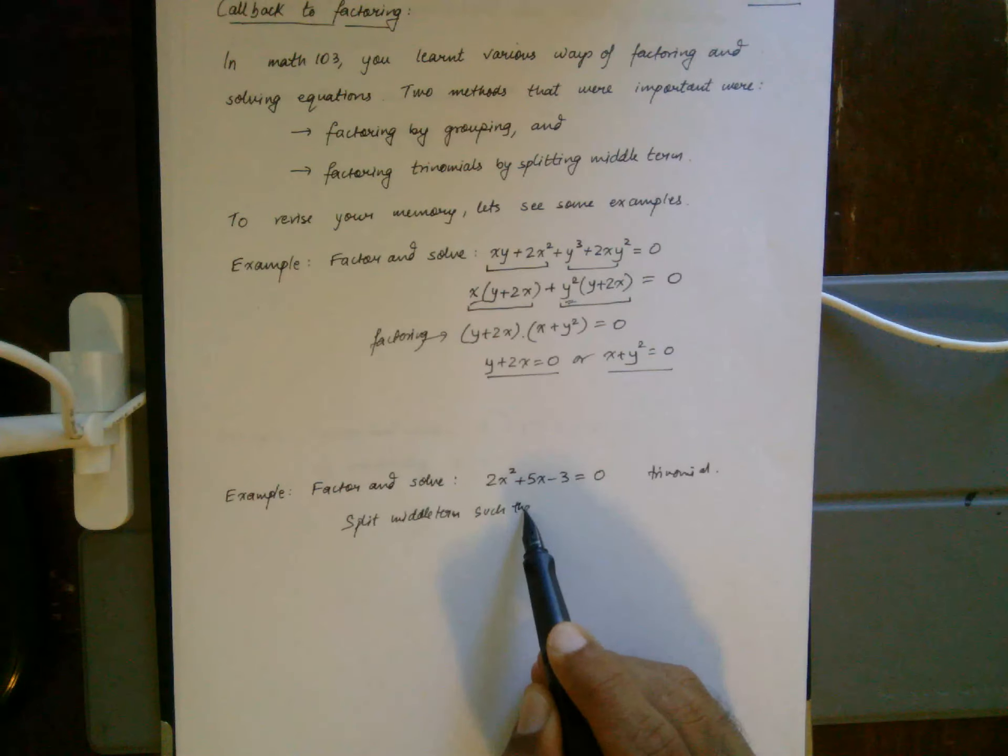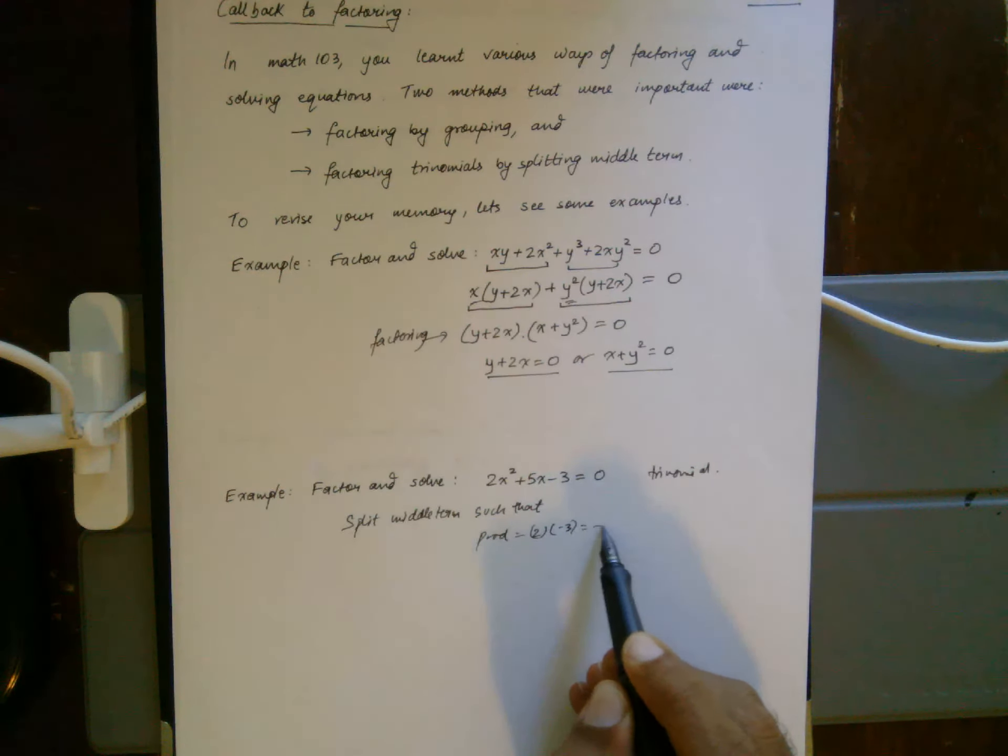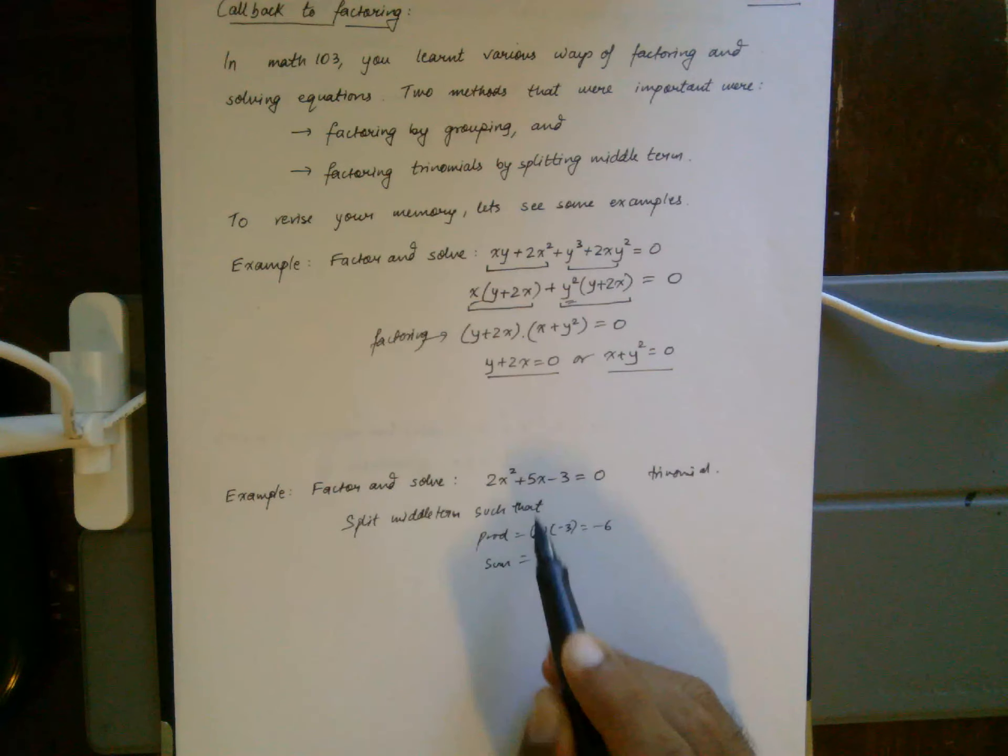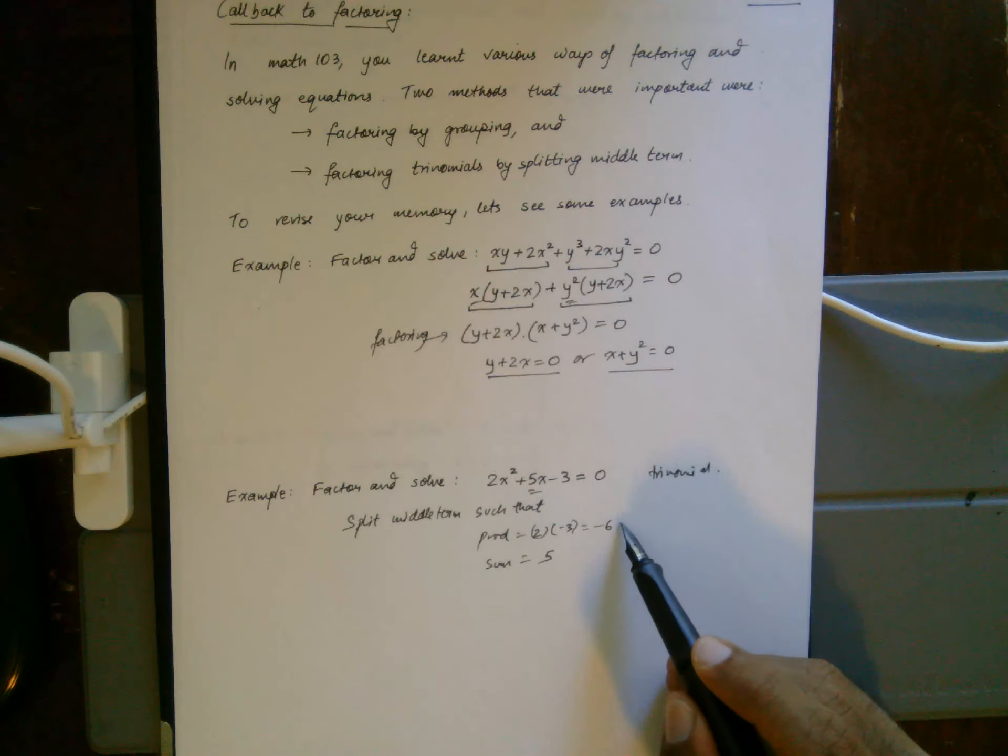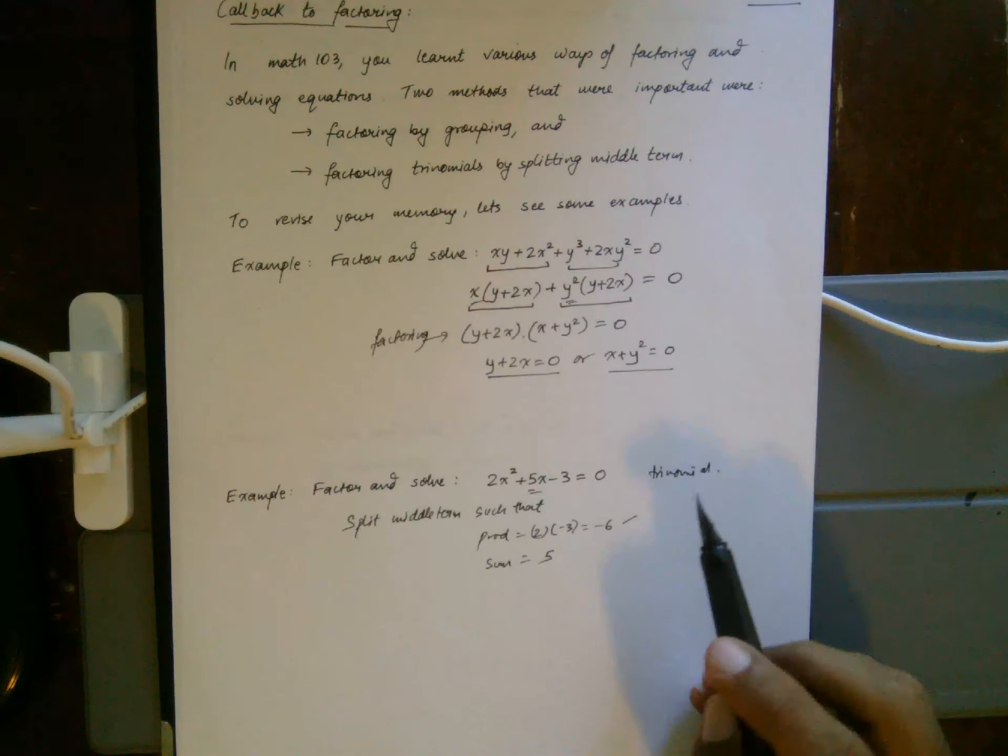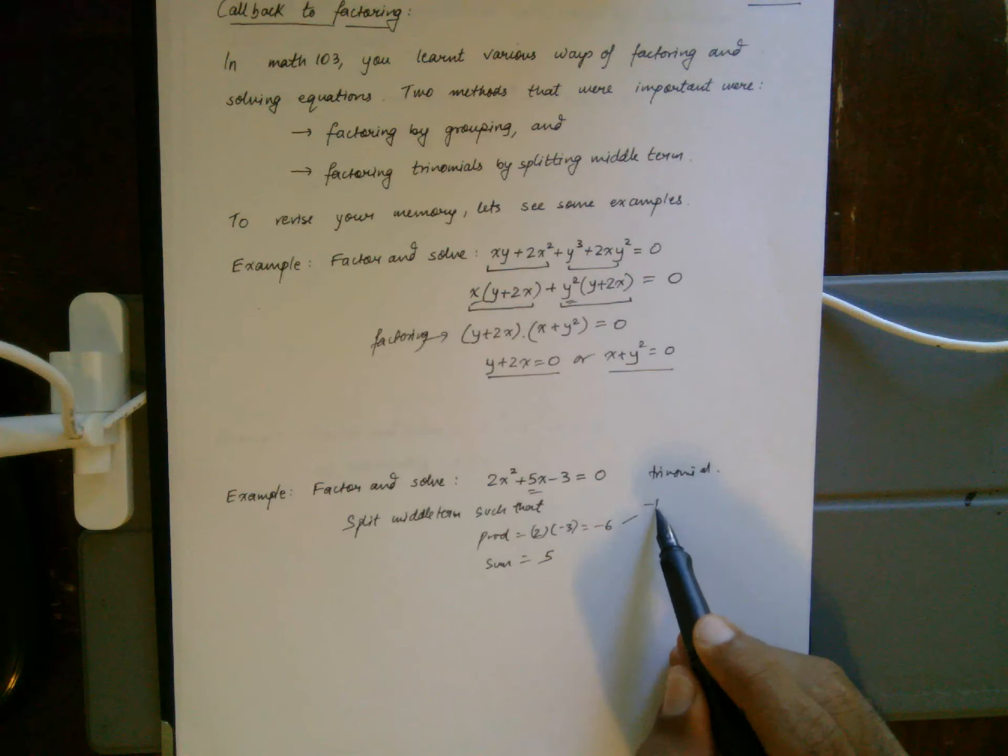Now we list down the ways in which I can get a product of negative 6: negative 1 and 6, negative 2 and 3, 2 and negative 3, 6 and negative 1.